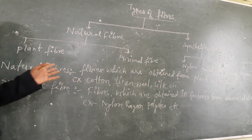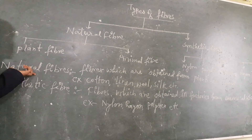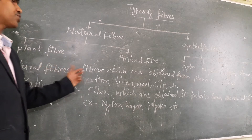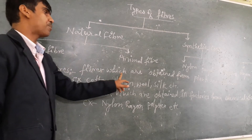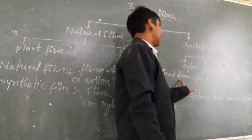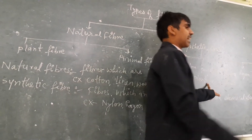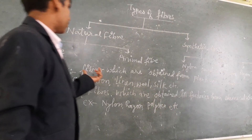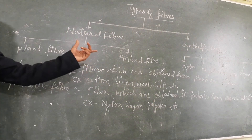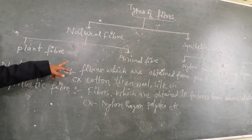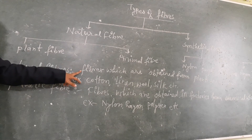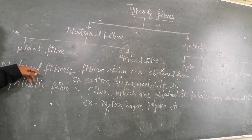What is natural fibers? Natural fibers are the fibers which are obtained from plants and animals.